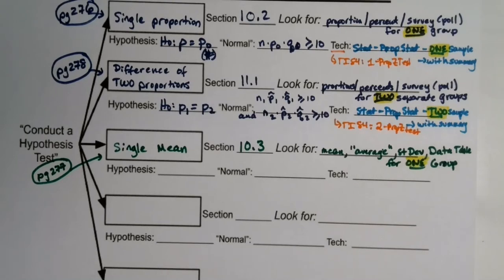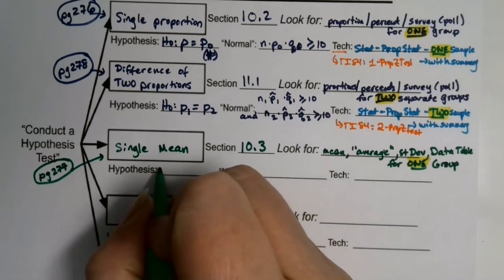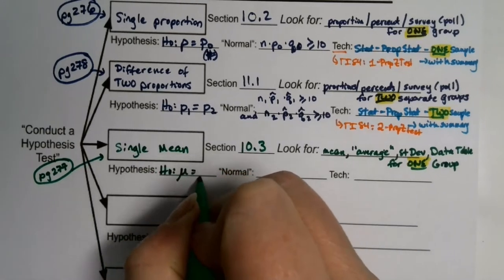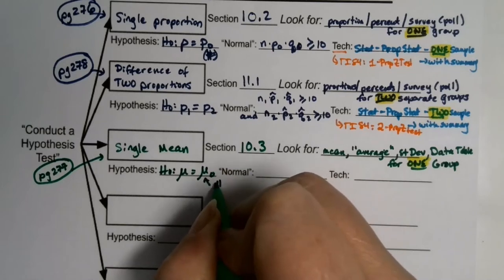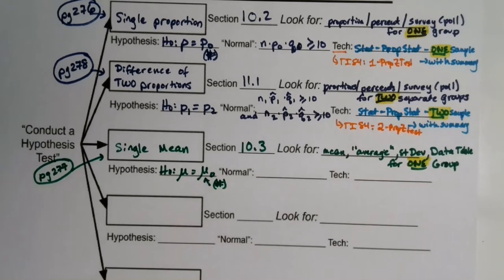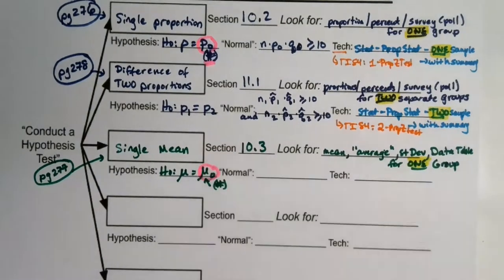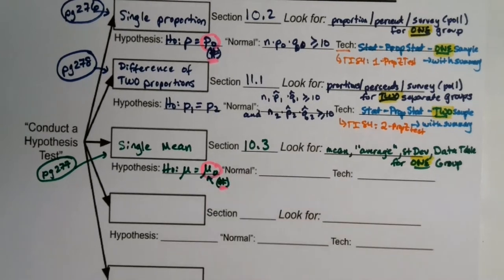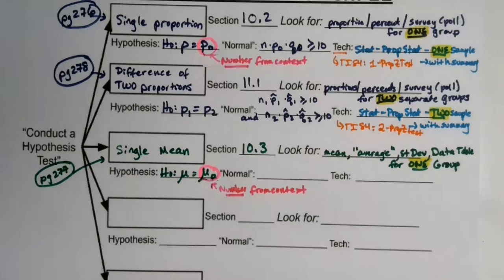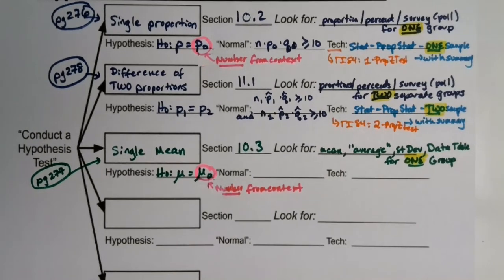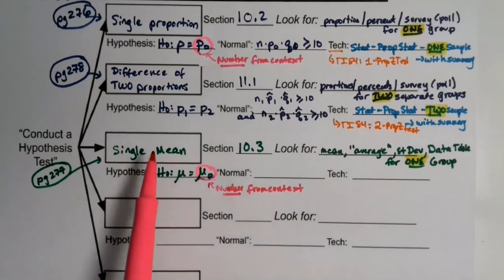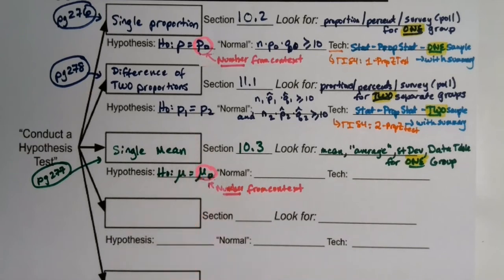The null hypothesis for the single mean test is that mu equals mu-naught, where mu-naught is a number given in context. Highlighting an important point: mu-naught and p-naught are the only hypothesis values that will actually be numbers. Everything else will be letters. Those are the values assumed to be true under the null hypothesis.